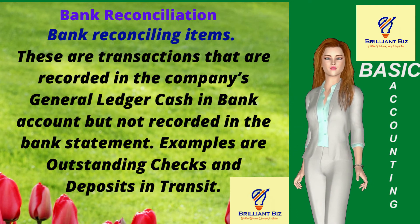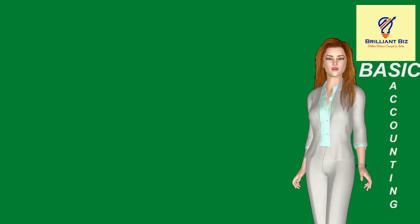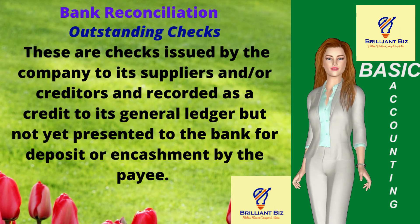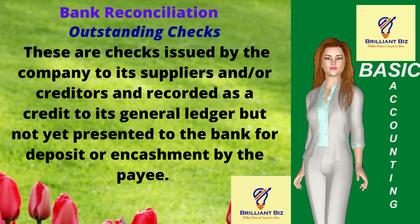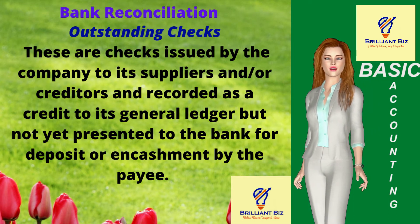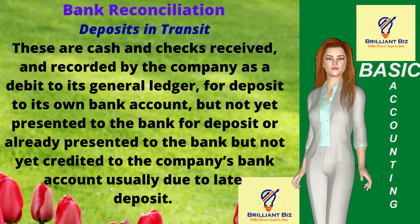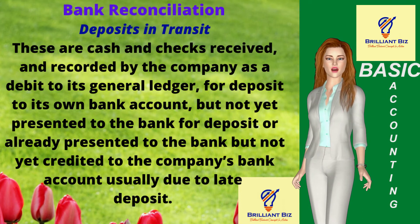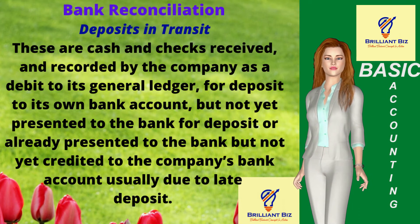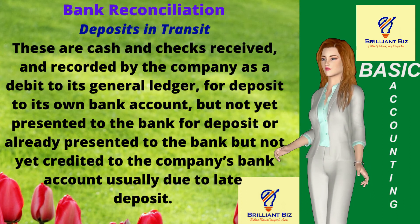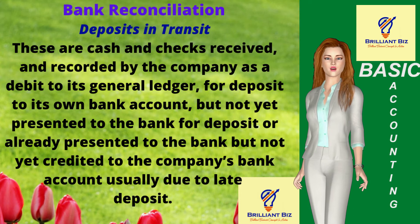Examples are outstanding checks and deposits in transit. Number eight: outstanding checks. These are checks issued by the company to its suppliers and/or creditors and recorded as a credit to its general ledger but not yet presented to the bank for deposit or encashment by the payee. Number nine: deposits in transit. These are cash and checks received and recorded by the company as a debit to its general ledger for deposit to its own bank account but not yet presented to the bank for deposit, or already presented to the bank but not yet credited to the company's bank account, usually due to late deposit.